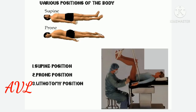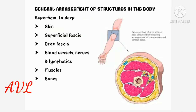Various positions of the body: supine position is when the person is lying with their back down and face and abdomen facing upwards. Prone position is when the person is lying with their face and abdomen facing downwards. Lithotomy position is when the person is lying on their back with legs raised upward with the help of external instruments. The normal configuration of the body from outside to inside is: skin, then superficial fascia containing adipocytes, blood vessels, lymphatics, and nerves, then the deep fascia which gives numerous septa towards the bone, dividing the region into compartments containing muscles, blood vessels, nerves, and lymphatics, with bone at the center.